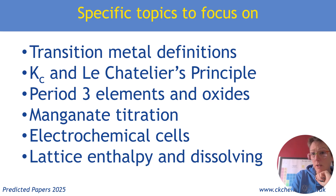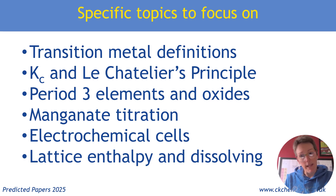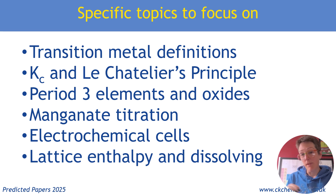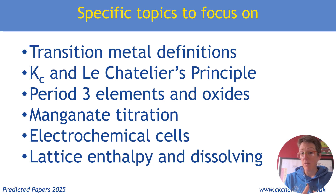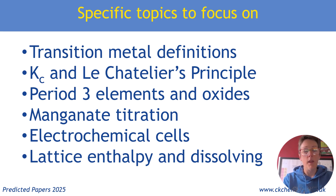Electrochemical cells — I think particularly in relation to experimental stuff. Don't think that experiments only come up in Paper 3, although Paper 3 has a bigger practical basis. In Paper 1 you could have experimental questions about titrations and about electrochemical cells especially — things like how to set up, drawing the diagram, and the conditions you need to measure your cell EMF.